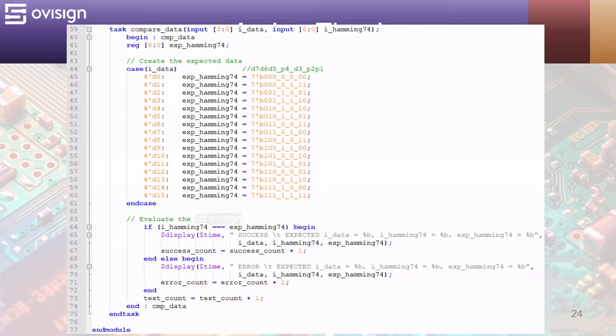I added an underscore to make visible the limit between data bits and the parity bits. At line 64 we evaluate if the output of the encoder, which is an input for this task, equals the expected value computed above. We increment the test counter each time the task is called and one of the success error counters if the data comparison passes or fails. This kind of task can be tailored to validate any kind of combinational circuit and a self-checking test bench.